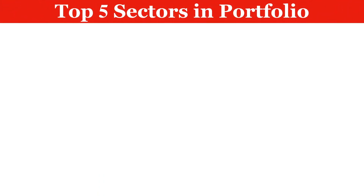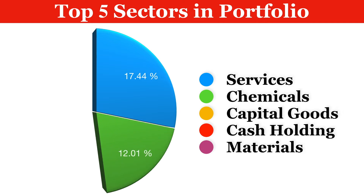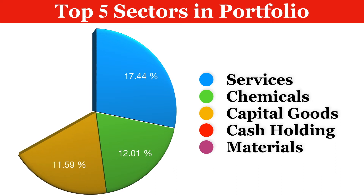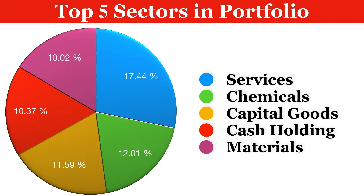In this section we will understand the top five sectors in this portfolio. 17.44% is allocated to the services sector. Chemicals has an allocation of 12.01%. Capital goods has an allocation of 11.59%. Cash holdings have an allocation of 10.37%. The remaining allocation for materials is 10.02%.